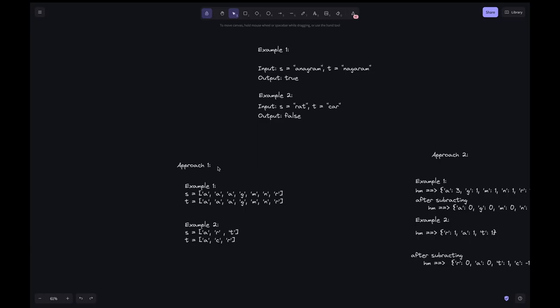For approach one, let's look into the examples. For example one, we have s equal to anagram and t equal to nagaram. We form a list out of these two and sort it. After sorting, we get like this. While comparing, we can see both are equal, so it is an anagram. For example two, we did the same process and got these two lists, which are definitely not equal, so they are not anagrams.